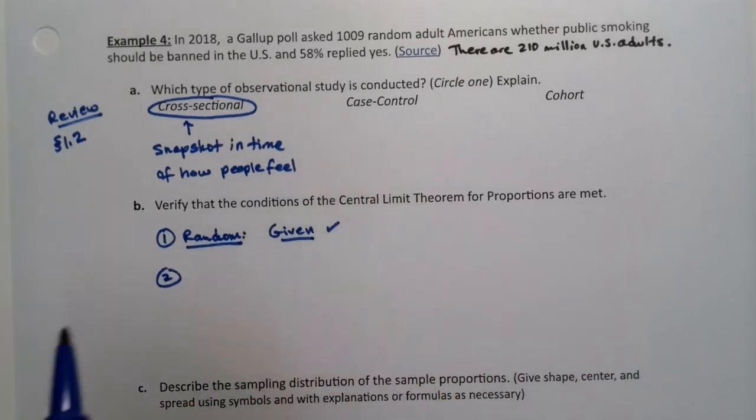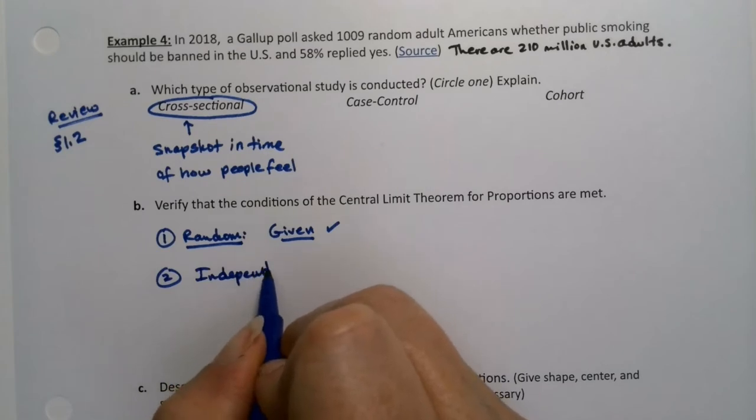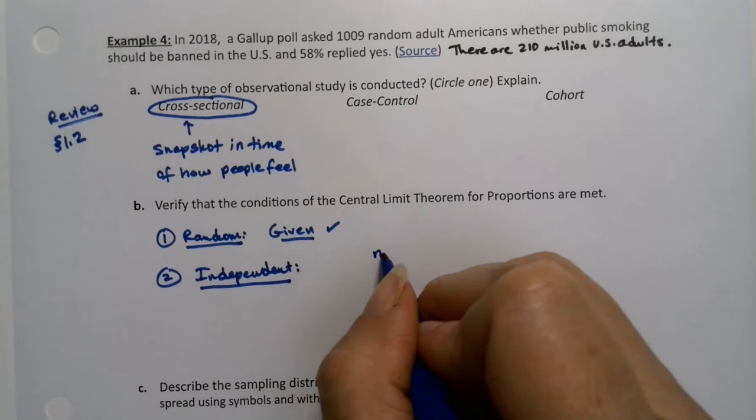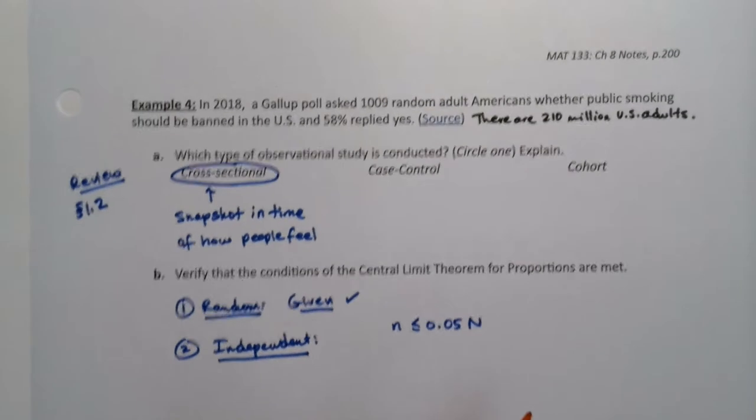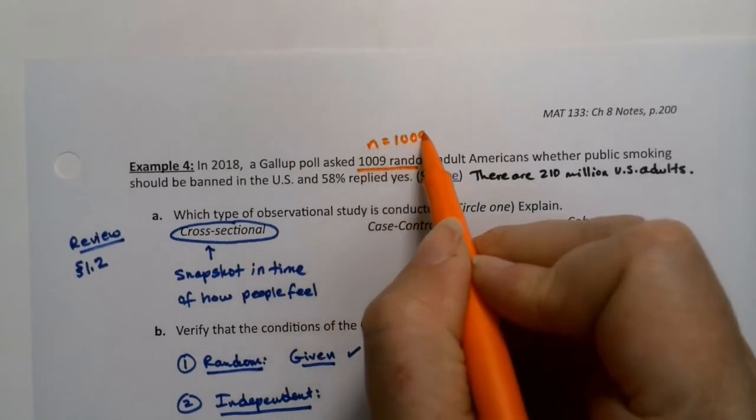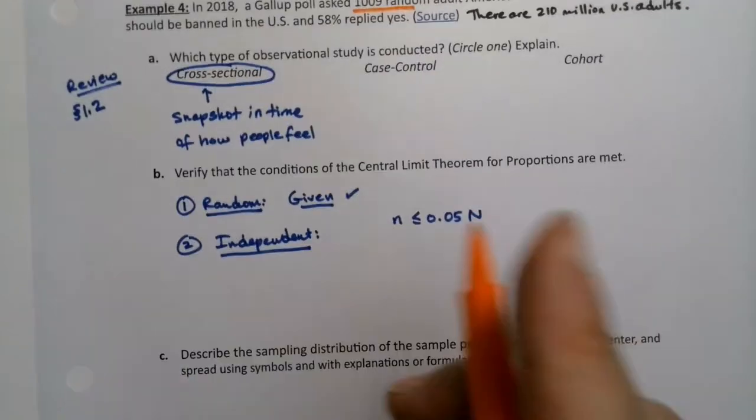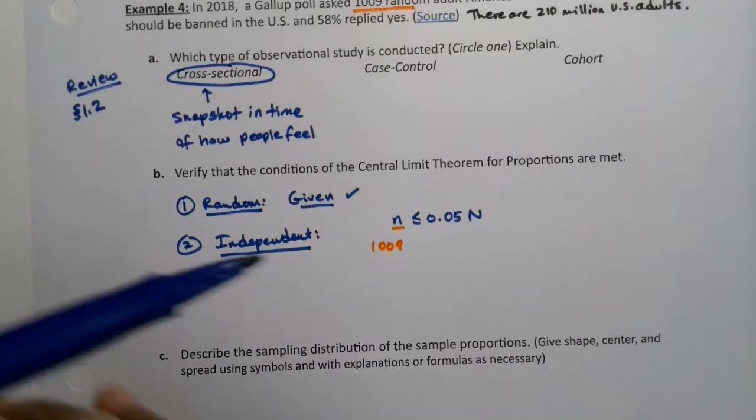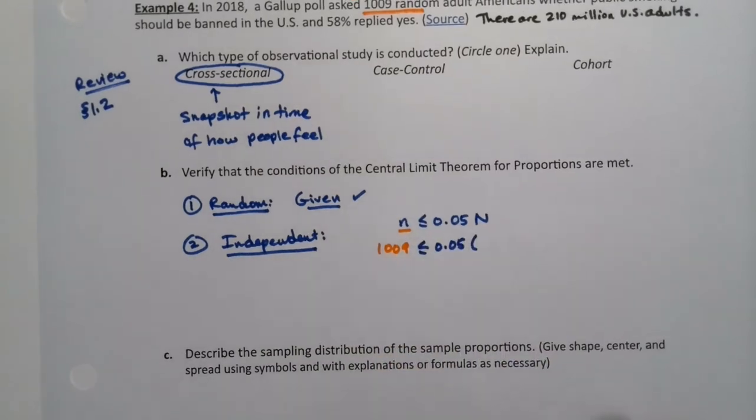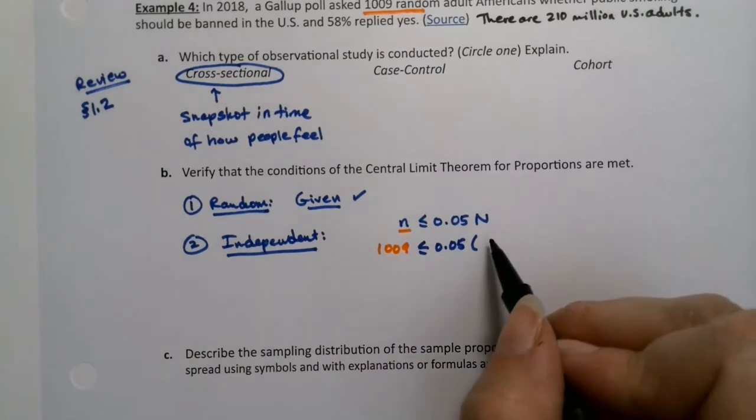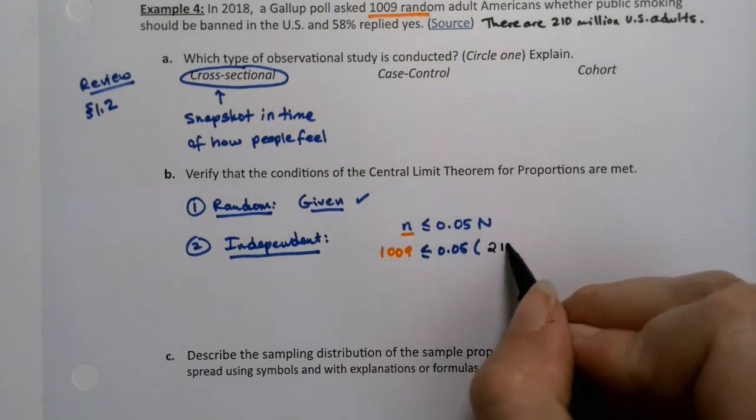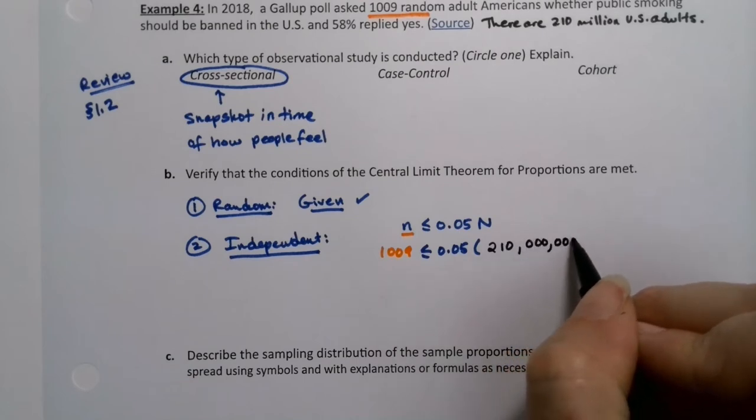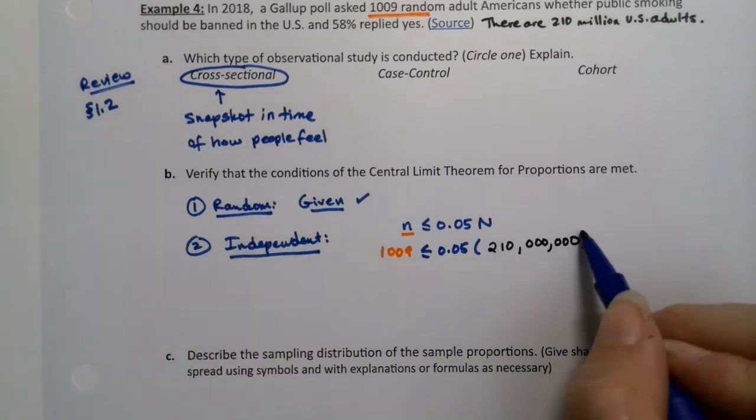Number two, we need independent. This is the hardest one of all three of them, actually. To be independent, you need little n to be less than 0.05 capital N, as long as you're sampling without replacement, which, of course, we almost always are. Little n was right here. Little n is 1,009. So that would be 1,009. Is that less than or equal to 0.05? And actually, we know capital N here, although we could have done this even if we didn't.